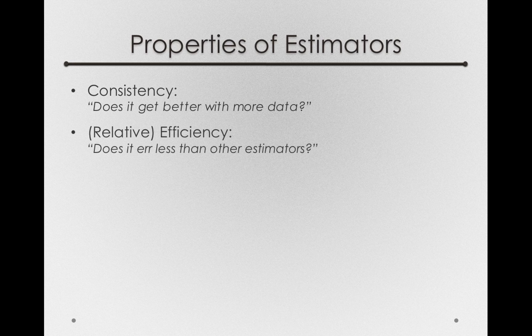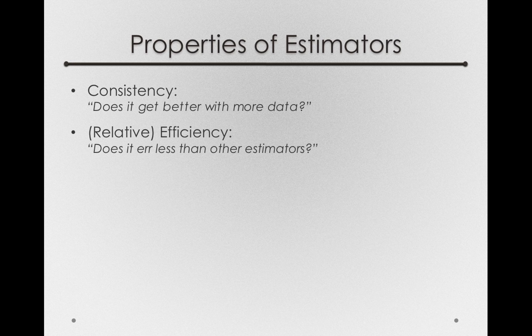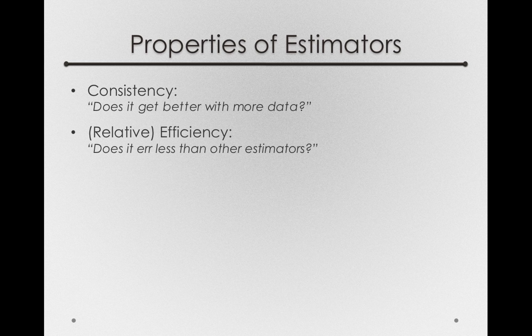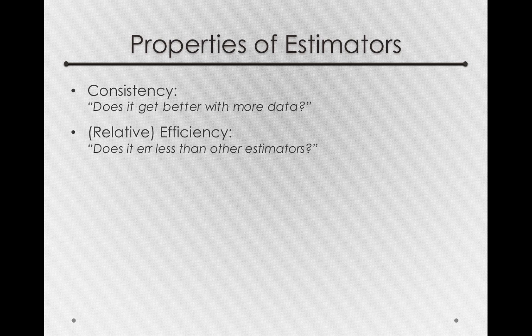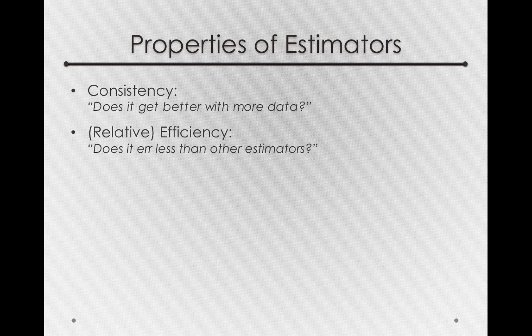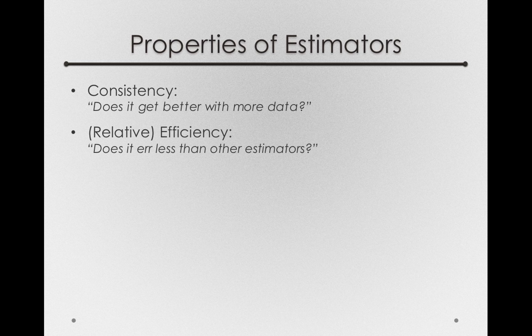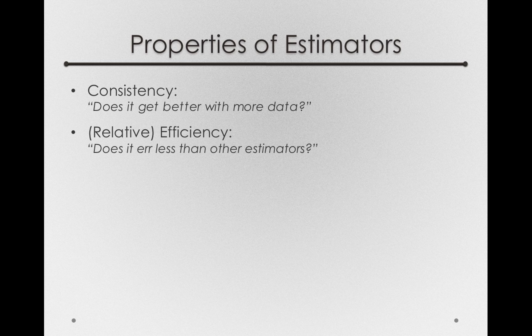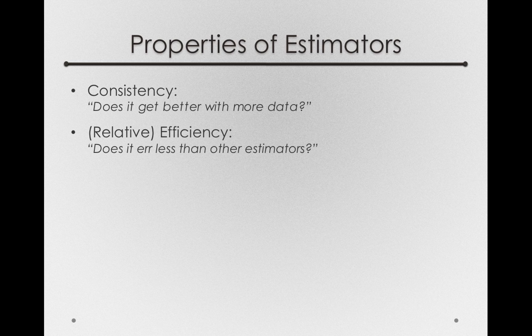The second property of an estimator is relative efficiency, and this turned out to be the characteristic that Arthur Eddington and Ronald Fisher were arguing about. Efficiency asks whether the statistic errs less than other estimators trying to estimate the same thing. And notice that with the squared deviation and the absolute deviation, we're really interested in the same basic thing—the variability of a distribution. But the question is, over repeated samples, does one do better than the other in actually guessing about the population parameter?